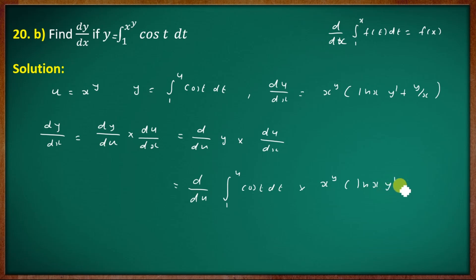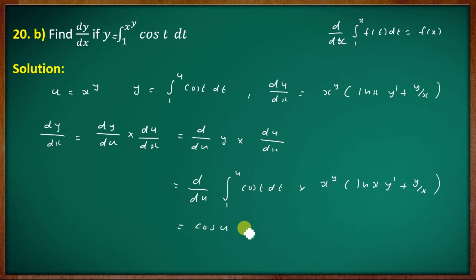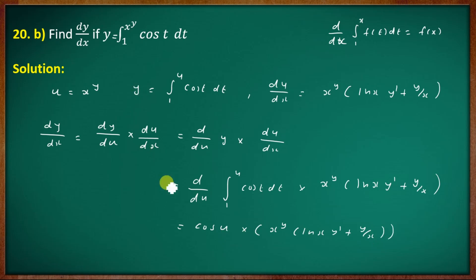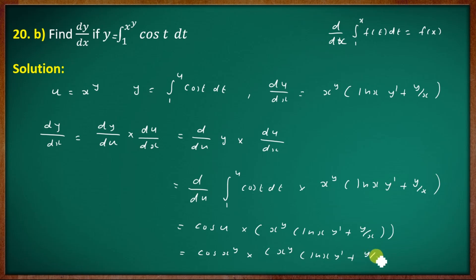This gives log x times y dash plus y by x equals x raised to y. If u equals x, then cos u into y equals y into y by x plus y by x. So cos of y into x raised to y, into x raised to y, into log x, y dash plus y by x. That gives the answer.